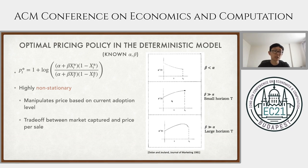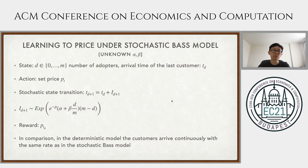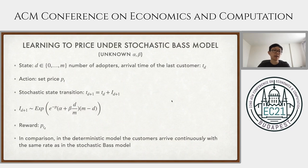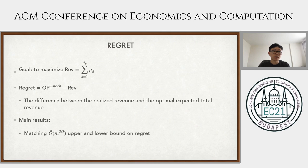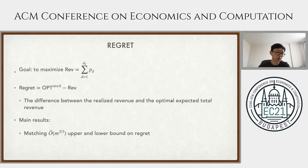Even in the deterministic model, the optimal price curve is already quite complicated. We work with the stochastic version of the Bass model, where we don't know the alpha and beta parameters. The model is essentially the same as before, except the arrival process of adopters, instead of being continuous and deterministic, now follows a non-homogeneous Poisson arrival process, where the rate is given by the Bass model. The main metric we use to measure algorithm performance is regret, which is the difference between the optimal expected revenue under the stochastic Bass model and the revenue we collect. The main results are a matching upper and lower bound on regret.